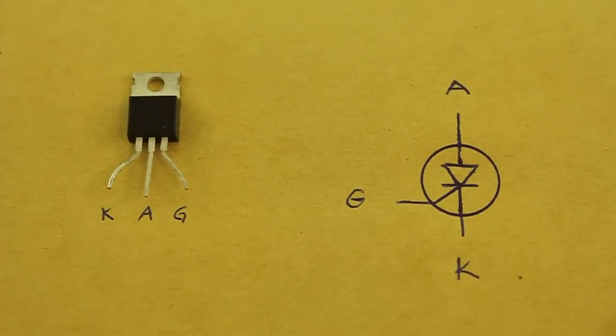This is the thyristor symbol. It has three terminals: anode to positive, cathode to negative, and the gate.